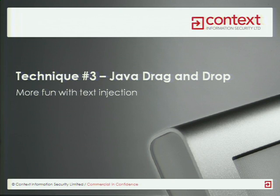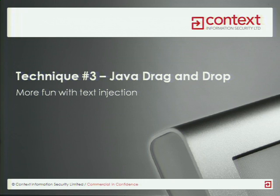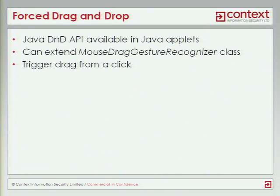On to technique number three. If you think back to the text injection, that required a drag-and-drop to work. The question is, can we get a user to do that? And also, if we want to fill in a form with many fields — for example, an address field on an online shopping site — we need to get the user to do a drag for each of those, and that's not likely to happen. However, I've been looking at the Java drag-and-drop API. Java has its own drag-and-drop API separate from the one in web browsers, and it's a bit more advanced. There is a class called MouseDragGestureRecognizer. In a Java applet, we can actually override that to change the behavior of how a drag-and-drop operation works.